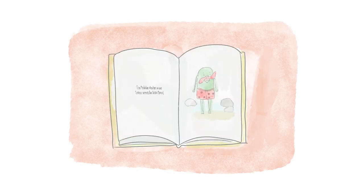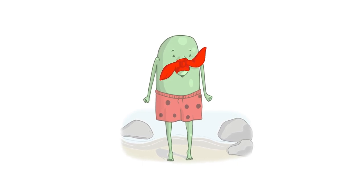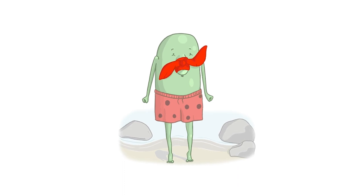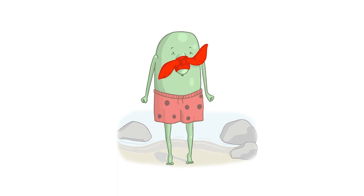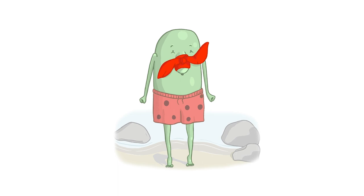The Pobble who has no toes swam across the Bristol Channel. But before he set out, he wrapped his nose in a piece of scarlet flannel. For his Aunt Jibisca said, no harm can come to his toes if his nose is warm. And it's perfectly known that a Pobble's toes are safe, provided he minds his nose.